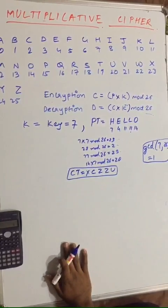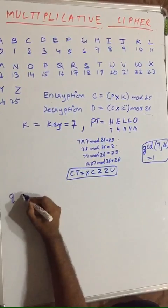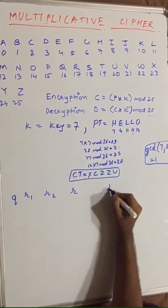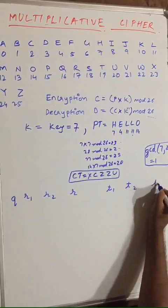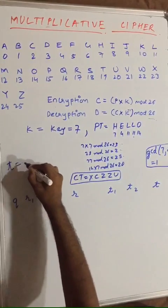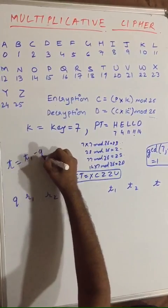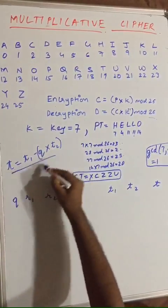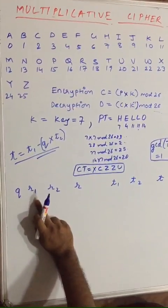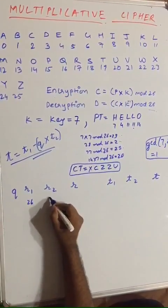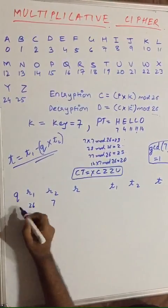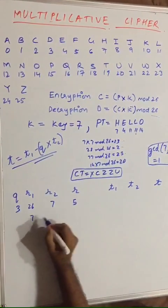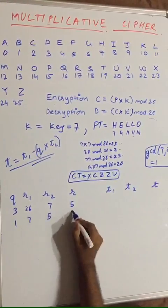Now we follow the method of multiplicative inverse, setting up columns Q, R1, R2, R, T1, T2, and T. The formula for T is T1 − Q × T2. Here R1 = 26 and R2 = 7. Since 7 × 3 = 21 with remainder 5, Q=3. Shifting: R1=7, R2=5, giving Q=1 with remainder 2.